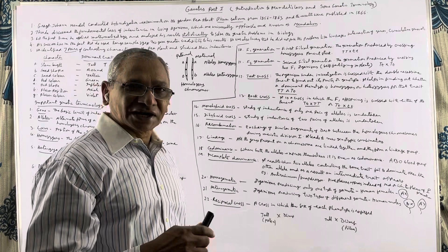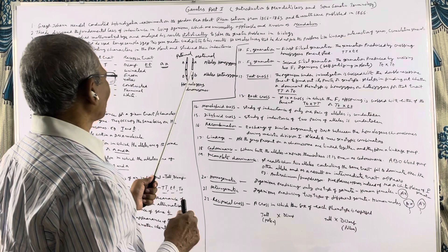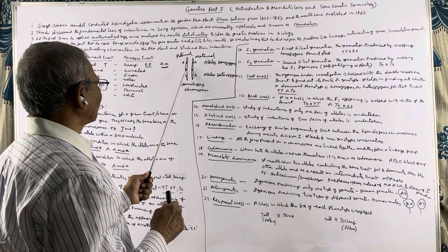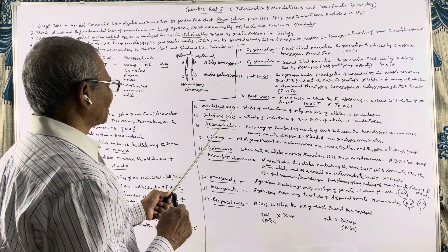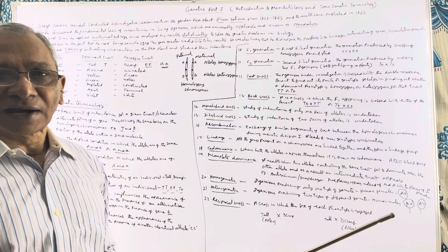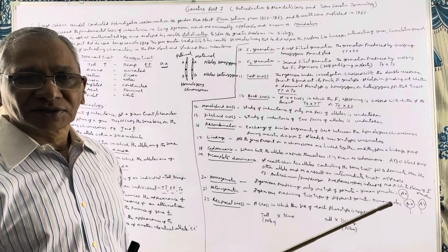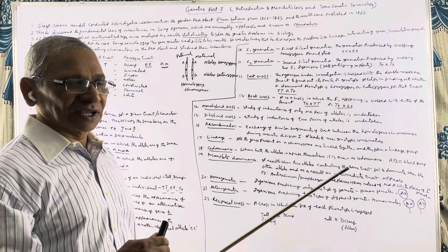Monohybrid cross: if we study the inheritance of only one pair of alleles, it is known as a monohybrid cross. In a monohybrid cross, the inheritance of only one pair of alleles is studied. In a dihybrid cross, the inheritance of two pairs of alleles is taken up. So if you study the inheritance of both A and B genes together, it constitutes a dihybrid cross. We will study monohybrid and dihybrid crosses in detail.